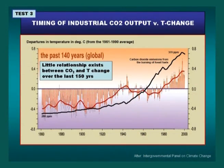Test number three is a cause and effect one. We say that increasing carbon dioxide in the atmosphere is going to cause the temperature to go up, so we compare those two curves. The red curve is the IPCC temperature curve from 1860 through to 2000, and the black curve is the ramping up of carbon dioxide. What we see is that at precisely the time after the Second World War that carbon dioxide emissions are increasing at their greatest rate, the temperature goes down. So test number three: there is very little correlation between these two curves, and that cause and effect just doesn't work.